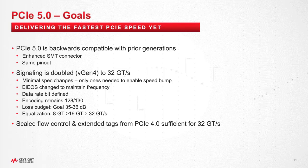That loss budget defines an eye height and eye width that's really pretty small. Other things that we had to add deal with tag bits and the like on the protocol side to enable proper buffering and things like that. So those are some of the goals that went into defining the Gen 5 specification.